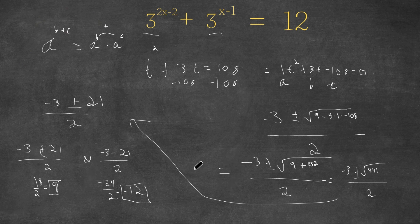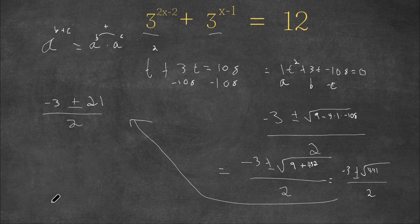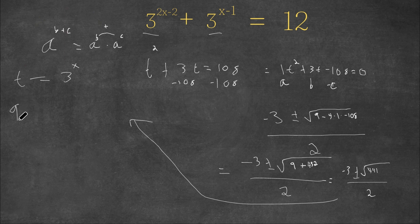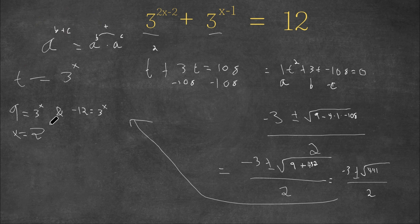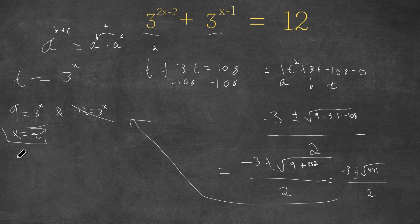So t equals 9 or t equals negative 12. Remember t equals 3 to the power of x. For t equals 9: 3 to the power of x equals 9, and 3 to the power of 2 equals 9, so x equals 2. For t equals negative 12: 3 to the power of x equals negative 12 — but any number raised to a power can never equal a negative number, so this is invalid. Our only answer is x equals 2.